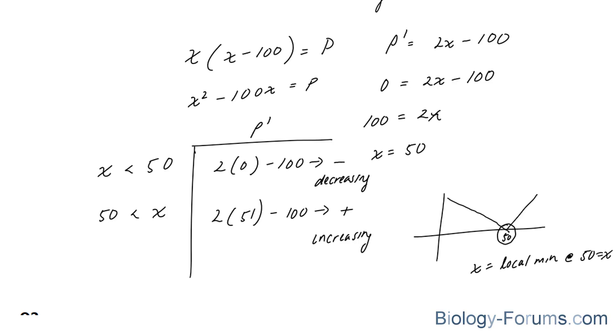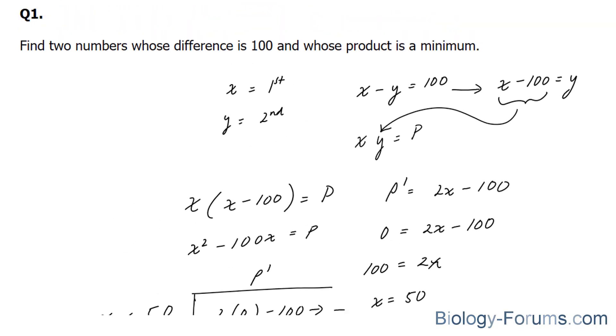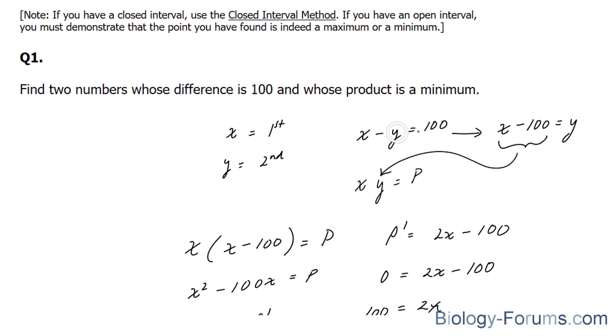Now, to find your y value that corresponds to this, we're going to take this number 50. We will apply it to this equation. So x minus y equals 100. I'm going to apply 50 right here. And I end up with 50 minus 100 is equal to my y, and therefore y is equal to negative 50.